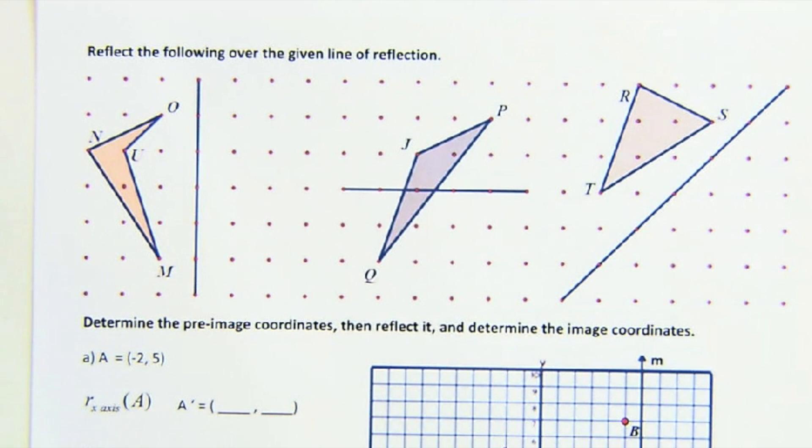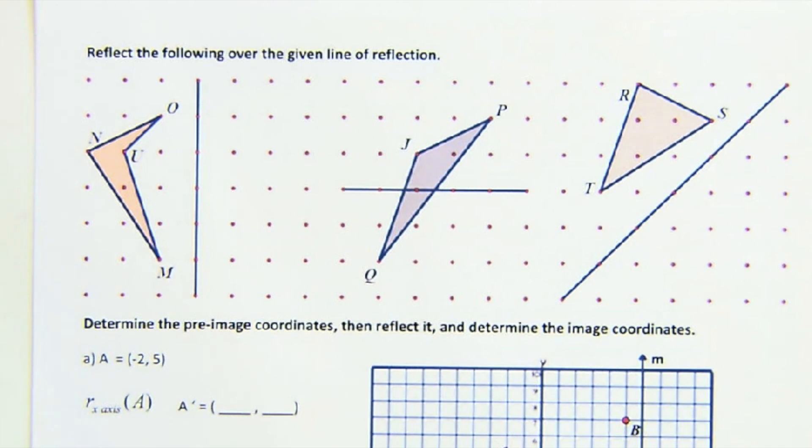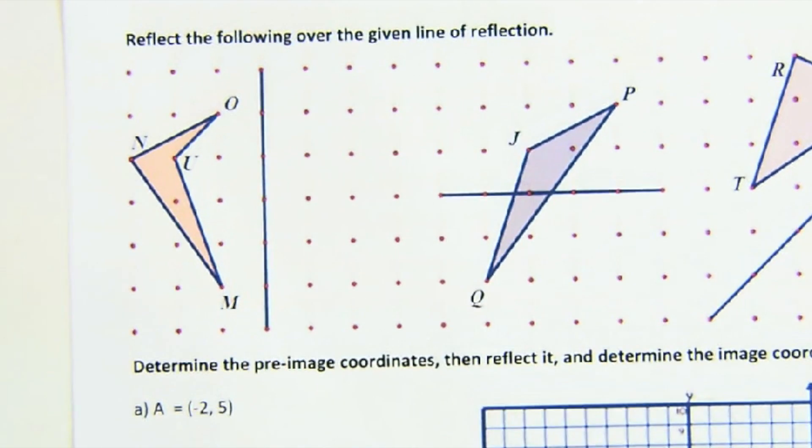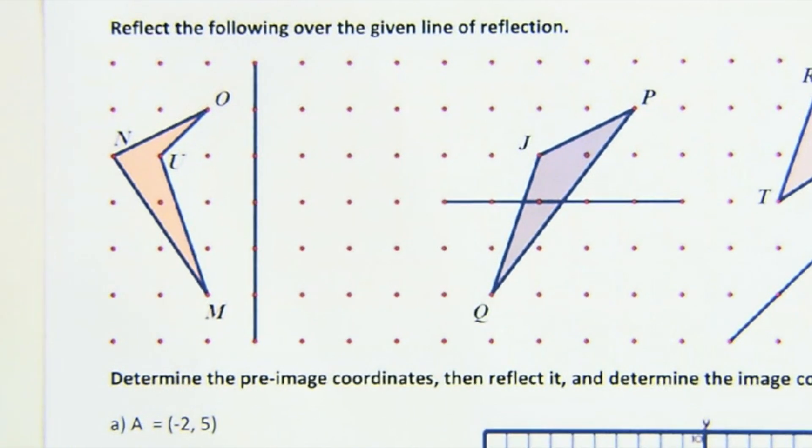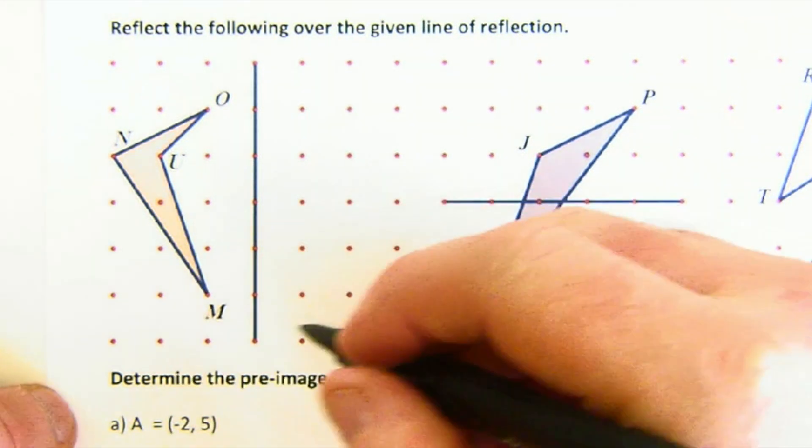All right, let's look at reflections. We've already talked about the properties of reflections, but this is just the physical doing now. We can look at a reflection on a grid. That's probably the easiest way to deal with reflections when you have a vertical or horizontal line of reflection, and the reason it's easy is because everything is already perpendicular.